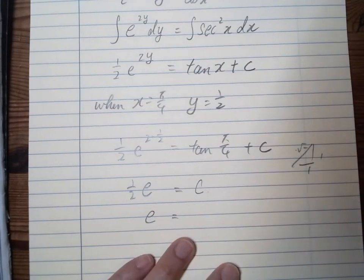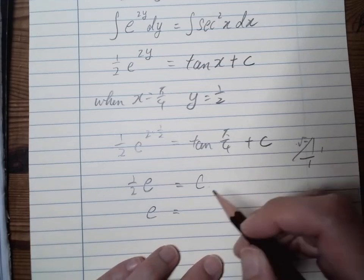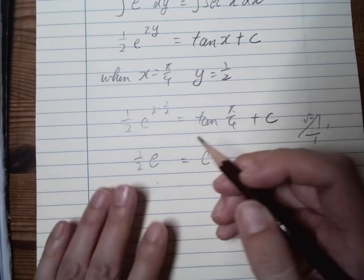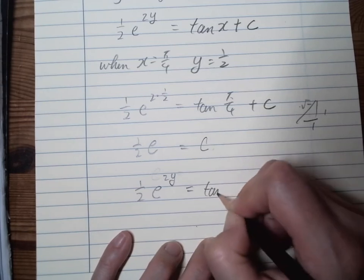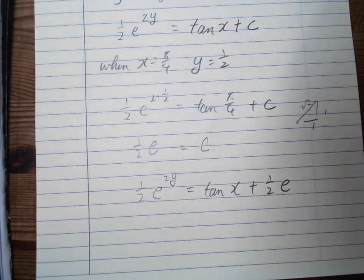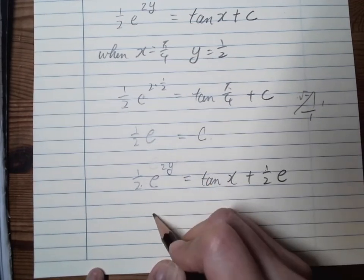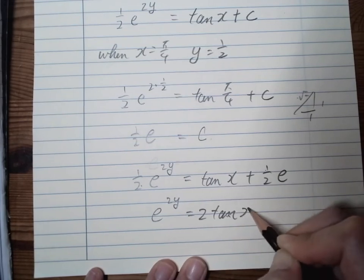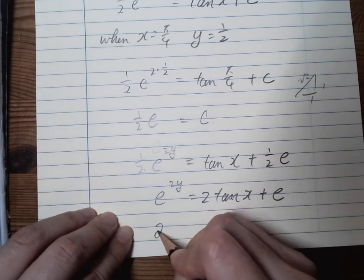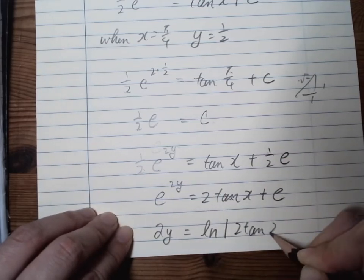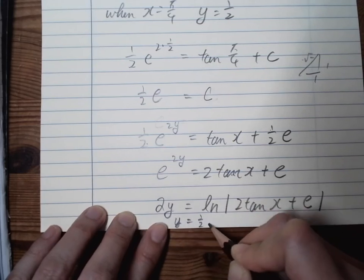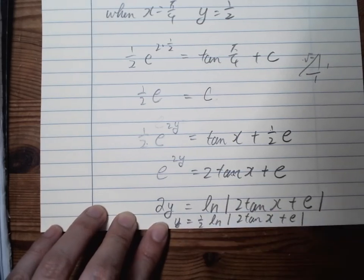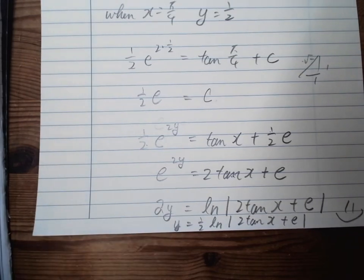We rewrite the equation: one half e^(2y) equals tan(x) plus one half e. Multiplying both sides by 2: e^(2y) equals 2 tan(x) plus e. Taking the natural log of both sides: 2y equals ln(2 tan(x) plus e). Therefore y equals one half ln(2 tan(x) plus e). That is our final answer — that's how separable differential equations, also called separable variables, work.